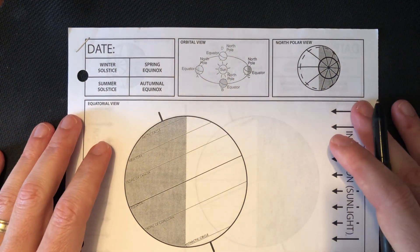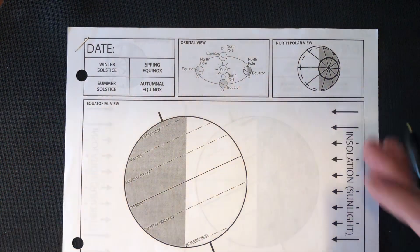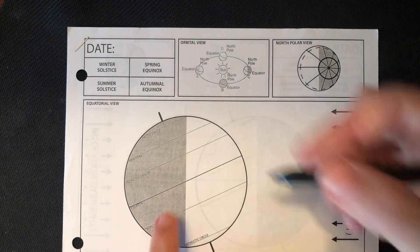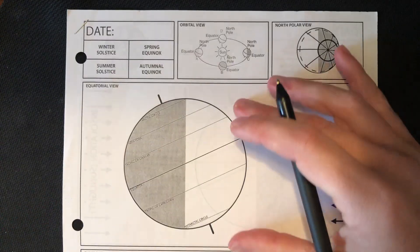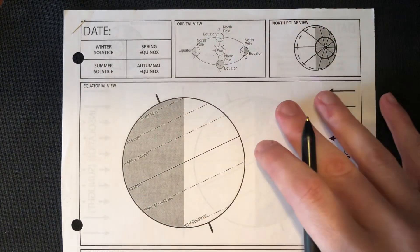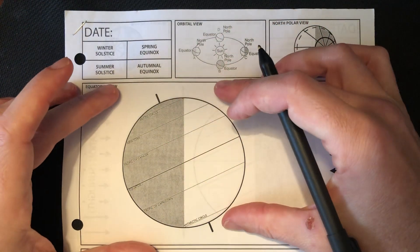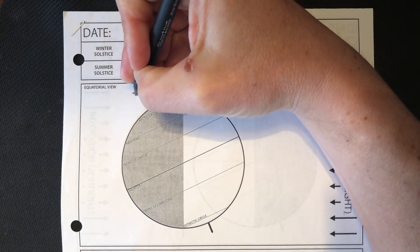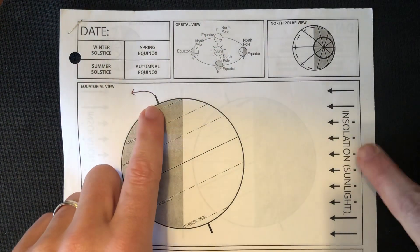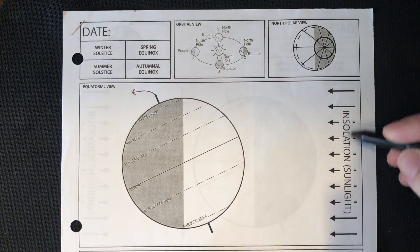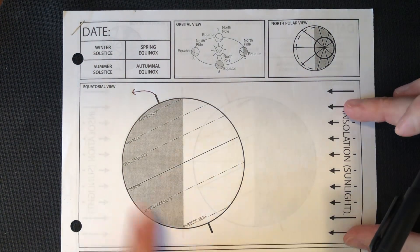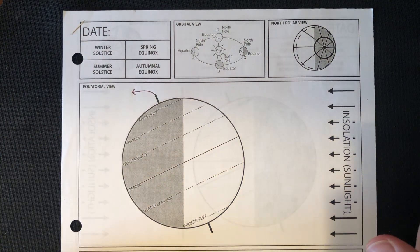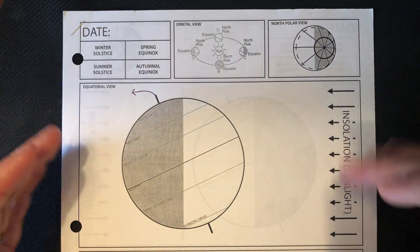One thing you want to make sure you understand is the difference between a season and a date. I know that this is the winter season, and I'm going to start with the equatorial perspective. What you want to look for is the North Pole in conjunction with the sun — the sunlight coming in from the right. If that North Pole is tilted away from the sun, this has to be wintertime. This is the season we're looking at: it's winter.